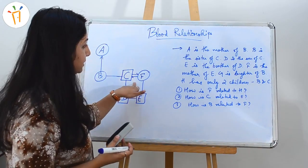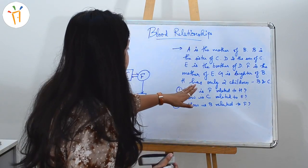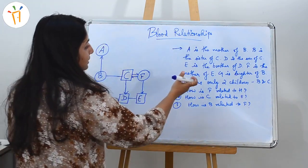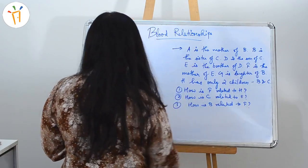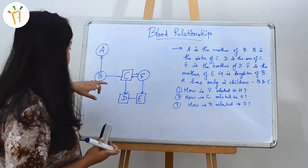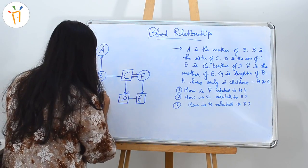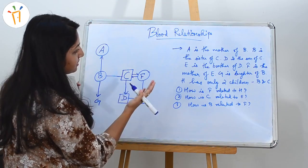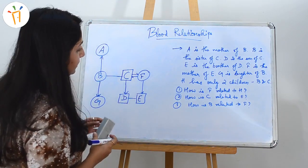We will denote it with a bi-directional line. Moving on to the next part: G is the daughter of B. B is here, and it is said that G is the daughter of B, so we will write G like this, and since G is the daughter, we will denote it with a circle.